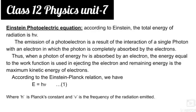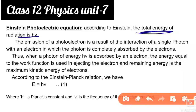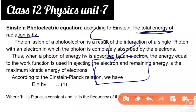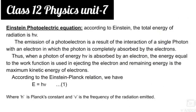All the numericals from this article are quite important, but you should know how this article was derived. According to Einstein, the total energy of radiation is hμ. When an electron is emitted from a surface, we need to understand what energy is involved.